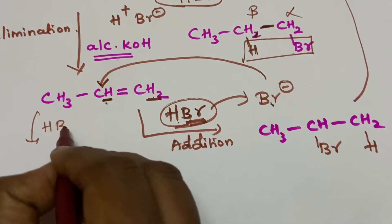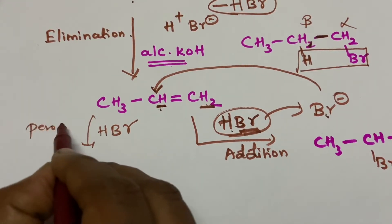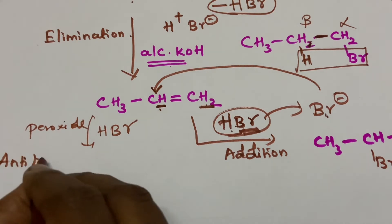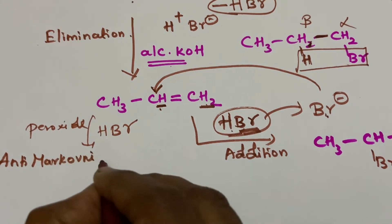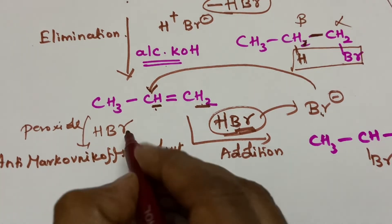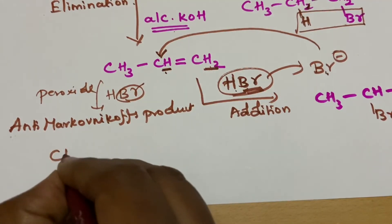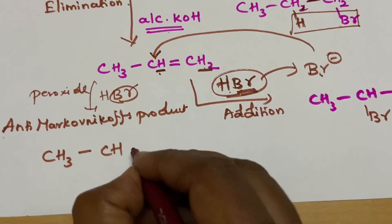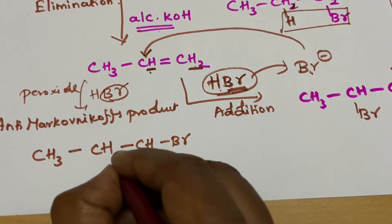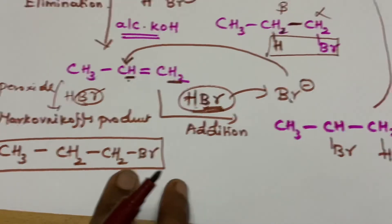One more thing: if you add HBr in the presence of any peroxide, you will get the anti-Markovnikov product. It is actually a radical reaction, so the bromine will get attached to the carbon which is having the more number of hydrogens — just opposite to the Markovnikov product. Kindly remember this as additional information.